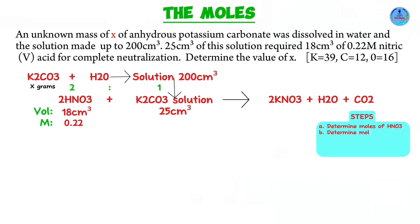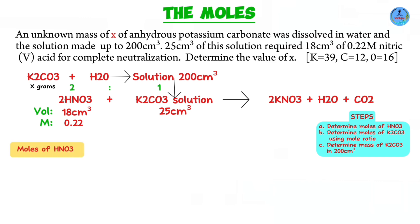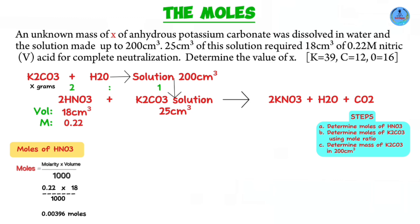Our steps: number one, determine the moles of nitric acid; then using the mole ratio determine the moles of potassium carbonate; lastly, determine the mass of potassium carbonate in 200 cubic centimeters. Starting with the moles of nitric acid: molarity 0.22 multiplied by 18 over 1000 gives us moles of nitric acid as 0.00396 moles.